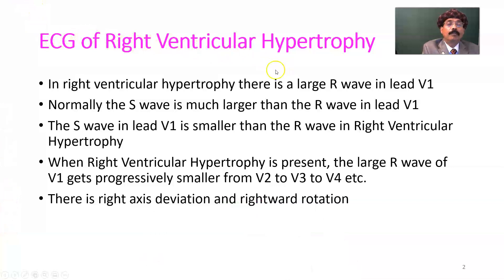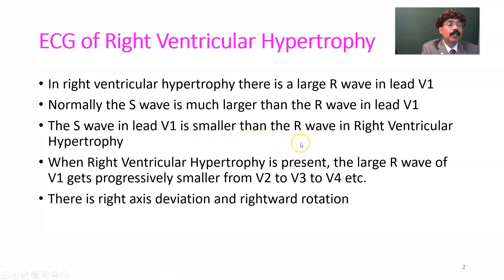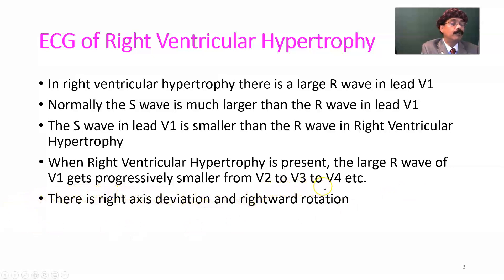The ECG of Right Ventricular Hypertrophy shows a large R-wave in lead V1. Normally, the S-wave is much larger than the R-wave in lead V1, but in right ventricular hypertrophy the S-wave becomes smaller than the R-wave. When right ventricular hypertrophy is present, the large R-wave in V1 gets progressively smaller from V2 to V3 to V4 onward.